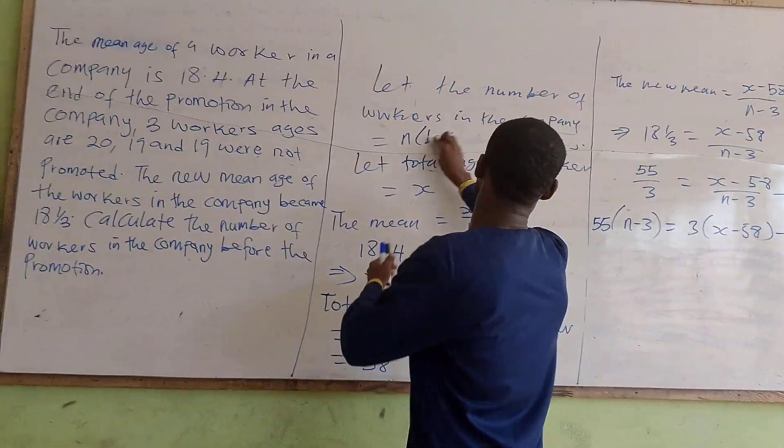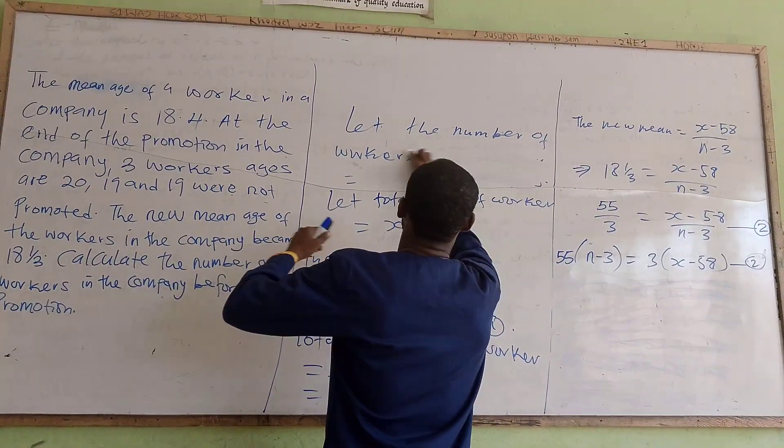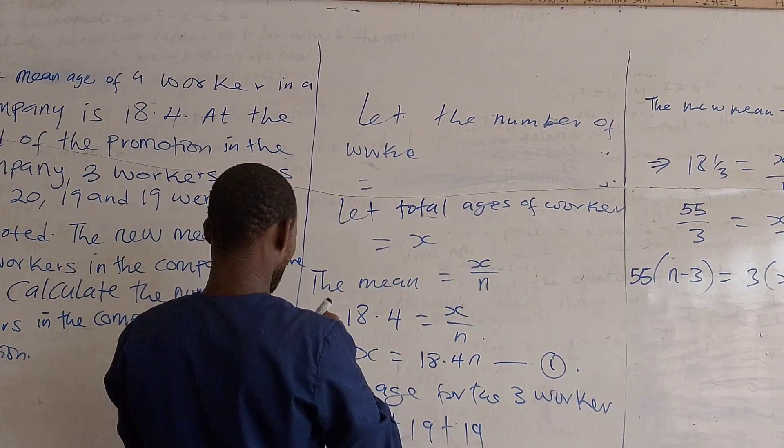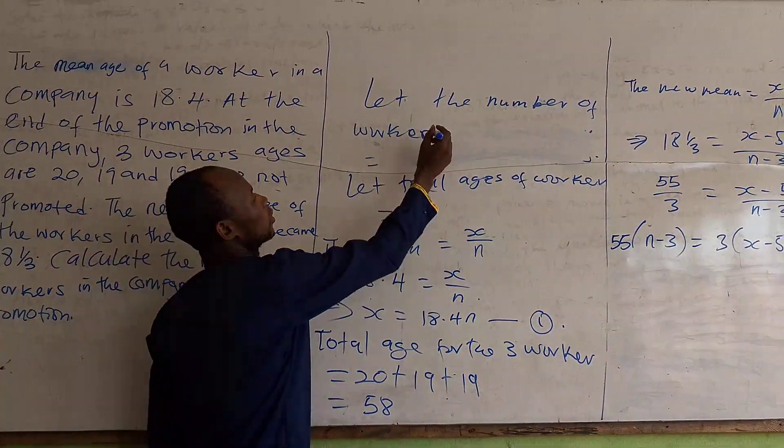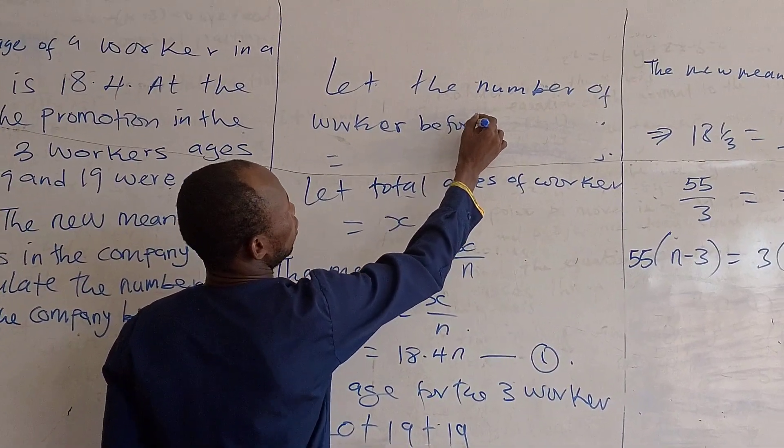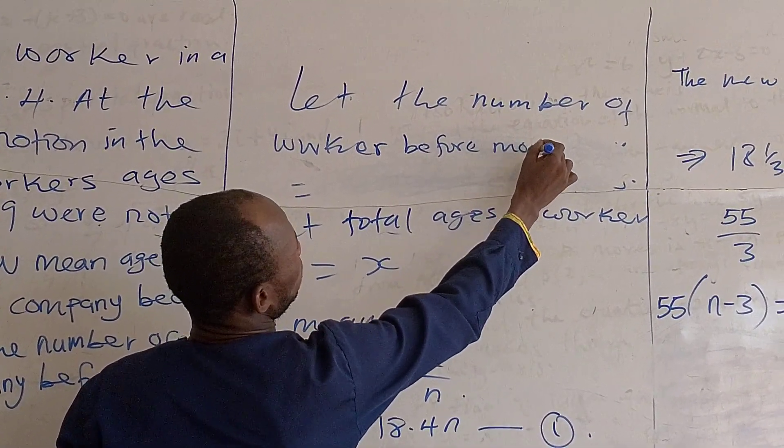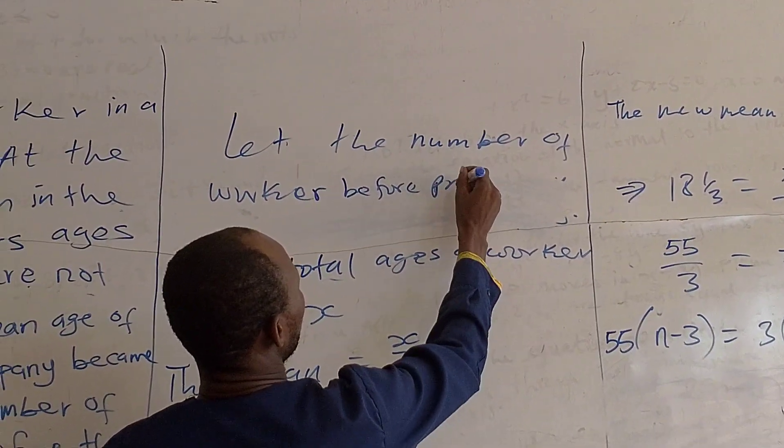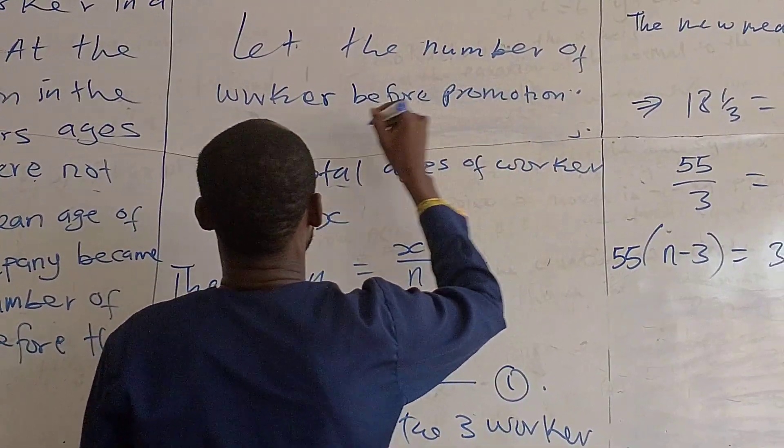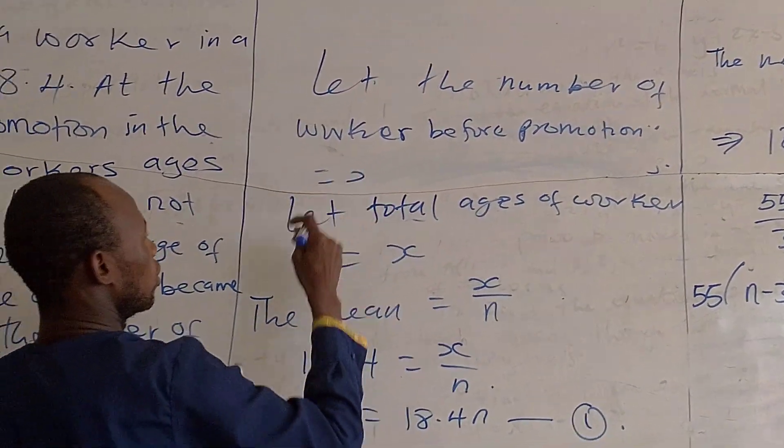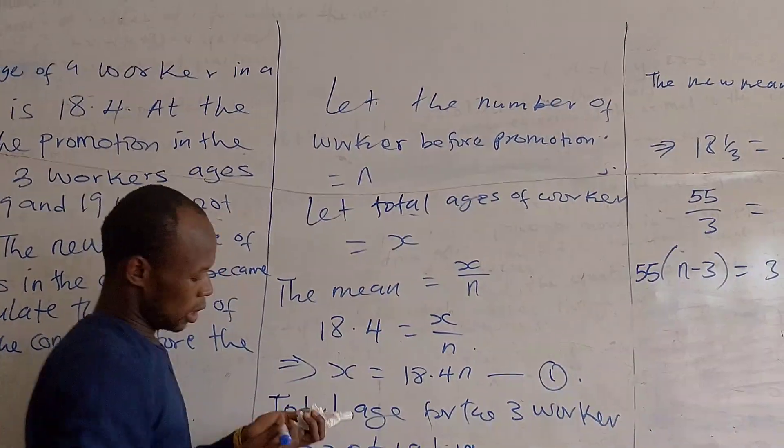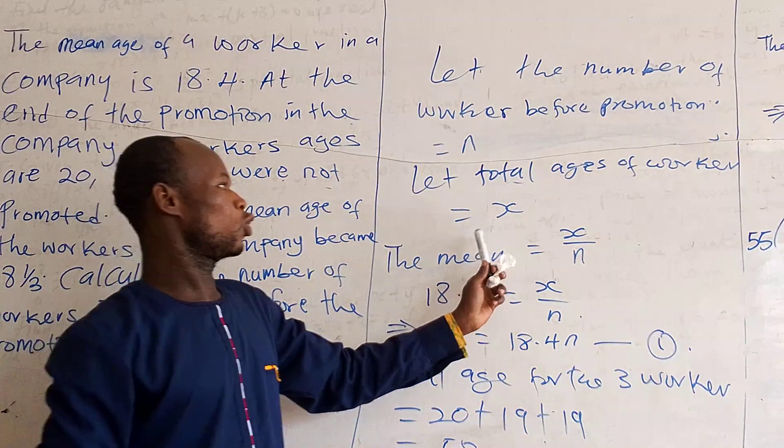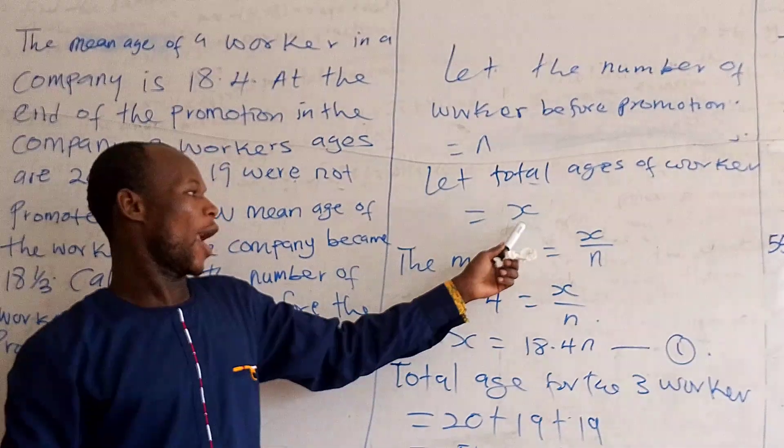So here we will say that let the number of workers before promotion equal to n, and let the total ages of workers equal to x.